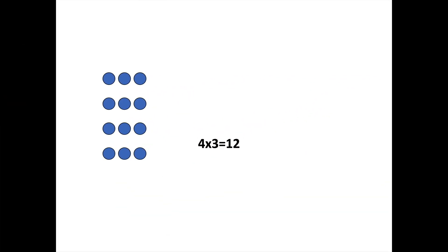So whenever we learn a new strategy, we want to understand why it works. So let's take a look at why doubling and halving works. Here we have an array that shows 4 rows of 3 or 4 groups of 3. And we can write that like I've shown: 4 times 3 equals 12. Now what if we take half of those rows and we move them up to double the amount in each row? Now we see that we have two rows of 6.